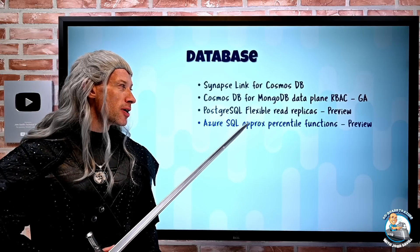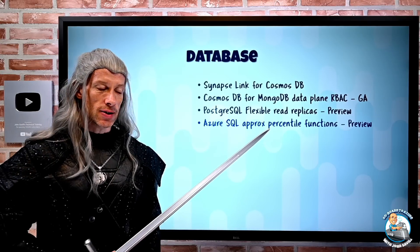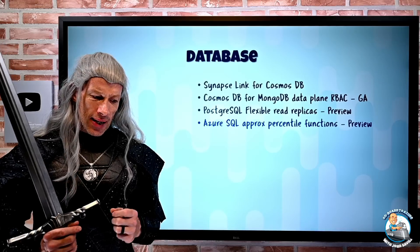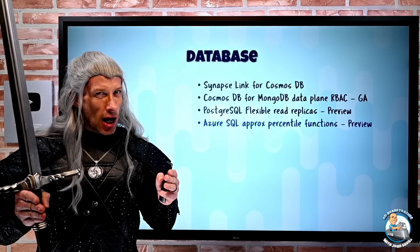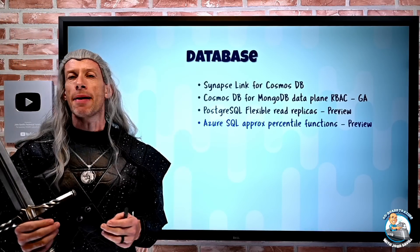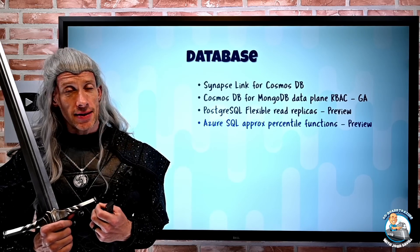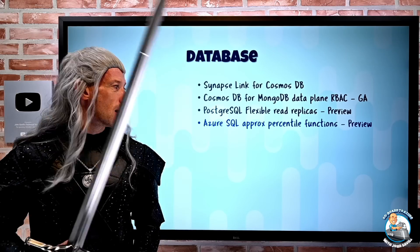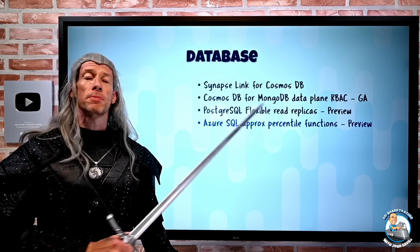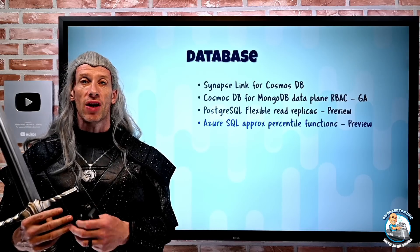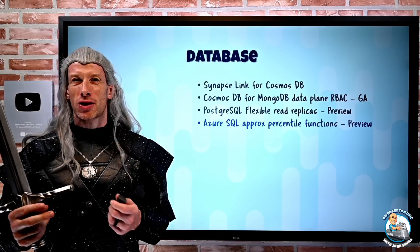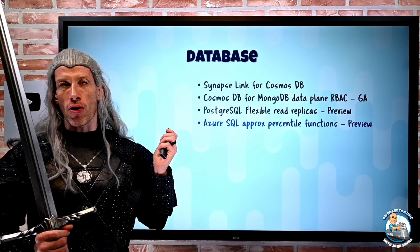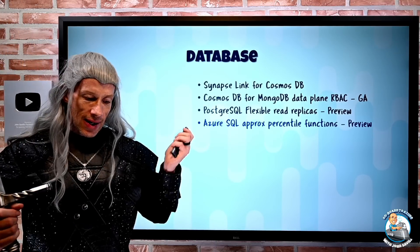Azure SQL approximate percentile functions — for Azure SQL DB and managed instance — are useful when you have a really large data set and getting percentiles becomes unresponsive. If I just need a really fast percentile in the 99th or 95th percentile and it doesn't have to be that precise, these approximate percentile functions let me very quickly, with a low amount of overhead, get an approximate value without having to worry about being absolutely precise. This is the APPROX_PERCENTILE function now available.